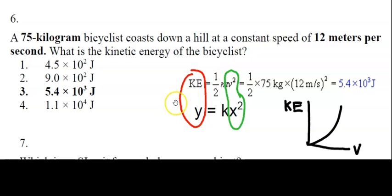But in this case, we know that the formula KE equals one half mv squared, the mass is 75 kilograms, and the speed of the bicyclist is 12 meters per second. One half times 75 kilograms times 12 meters per second squared gives you 5.4 times 10 to the 3 joules. That's how much energy the bicyclist has at that moment.